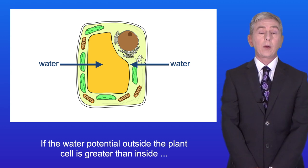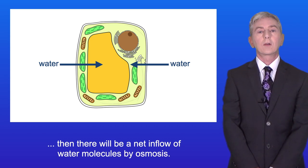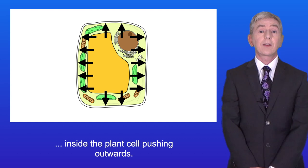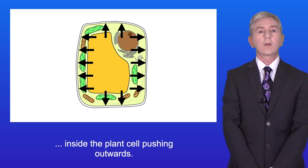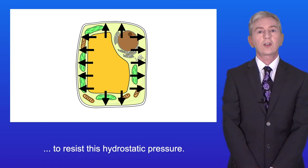Now if the water potential outside the plant cell is greater than inside then there'll be a net inflow of water molecules by osmosis. This creates a great deal of hydrostatic pressure inside the plant cell pushing outwards. So the plant cell wall must be mechanically strong enough to resist this hydrostatic pressure.